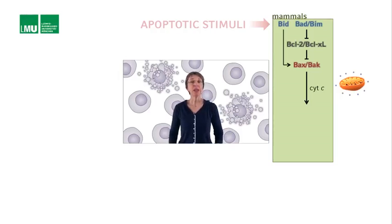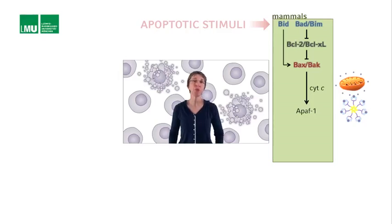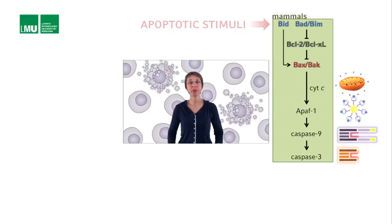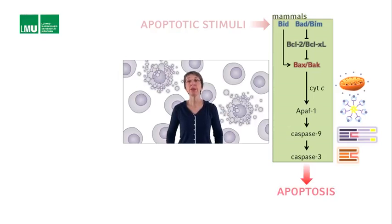The binding in the cytoplasm of cytochrome C to APAF1 monomers triggers apoptosome assembly. The assembled apoptosome facilitates the activation of the initiator caspase, caspase 9, which once fully active cleaves and activates the effector caspase, caspase 3. The activation of caspase 3 can be considered the point of no return - the event that irreversibly commits a cell to the apoptotic fate.